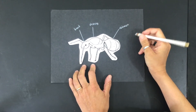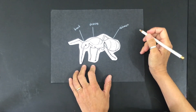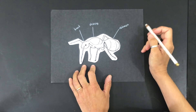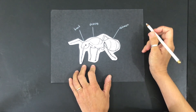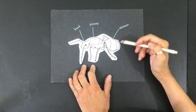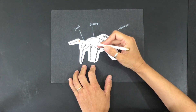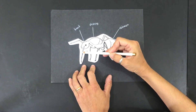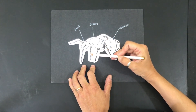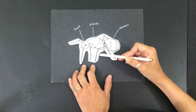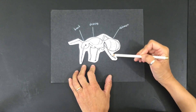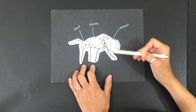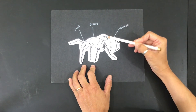Do you remember how many legs insects have? Let's count them: one, two, three, four, five, and six. Insects have six legs.